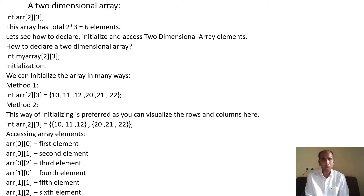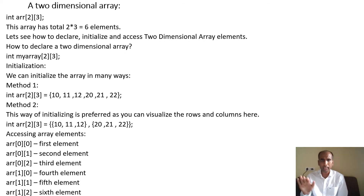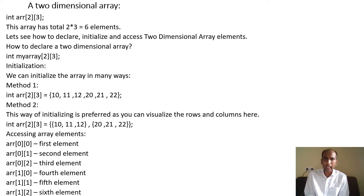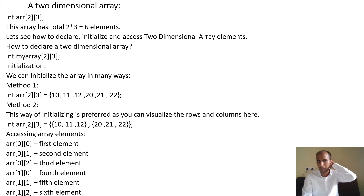You can also initialize a 2-dimensional array. If you declare an array of 2 rows and 3 columns, the total number of elements is 6. In method 1, using arr[2][3], you directly put the elements — 10, 11, 12 go to the first row and 20, 21, 22 go to the second row. In method 2, it is very clear which values go in each row using nested braces. Alternatively, you can directly assign using arr[0][0], arr[0][1], and so on up to arr[1][2] for the sixth element.